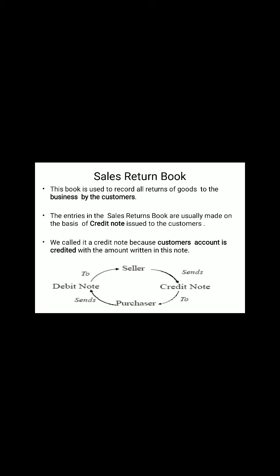Now I am moving to the sales returns book. The sales returns book is used to record all returns of goods to the business by the customer — meaning the customer is returning goods to the business. When this happens, a credit note is made. This is also a source document, and it gives full details of the return. A credit note is made when goods are returned by the customer, and the customer's account is credited.